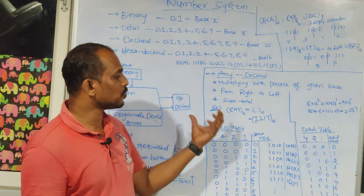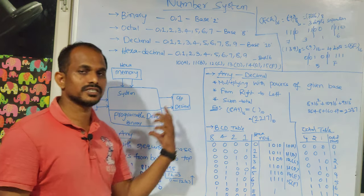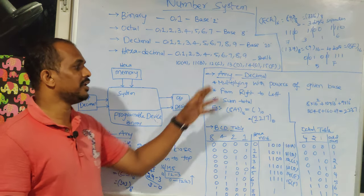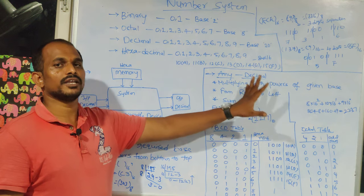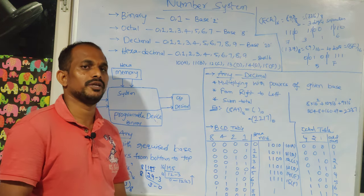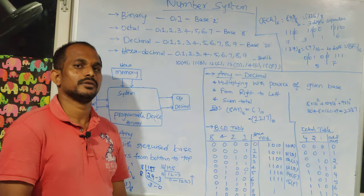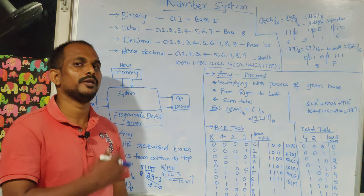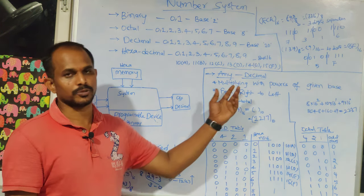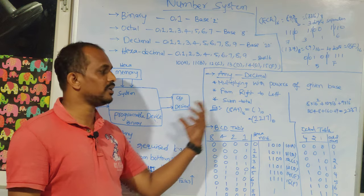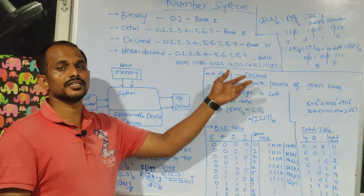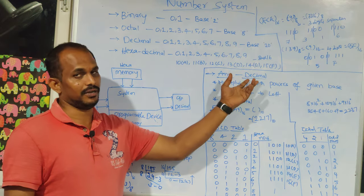These two conversions — decimal to any format and any format to decimal — are the most important because input always comes from the user in decimal, is processed in another format, and the output must return to decimal. This is why you must understand decimal to any and any to decimal very clearly.